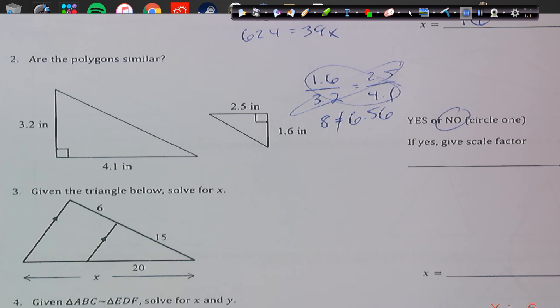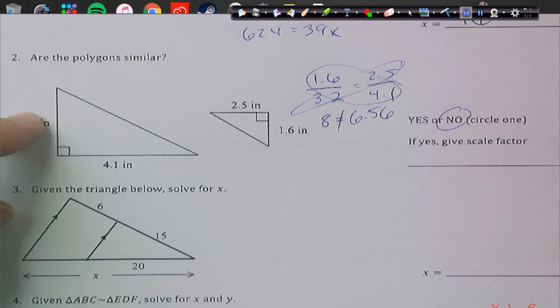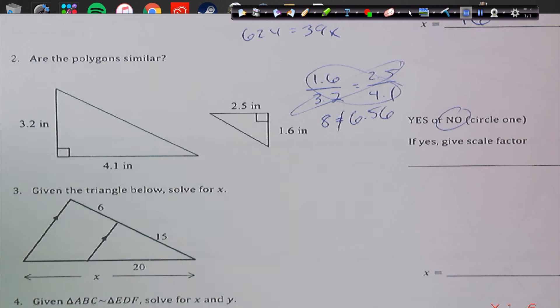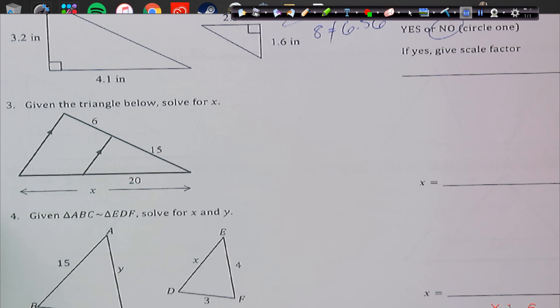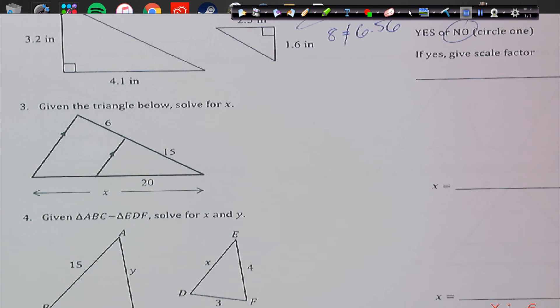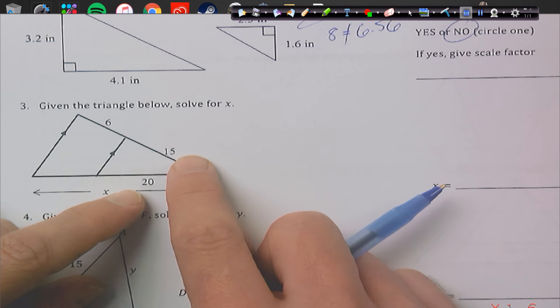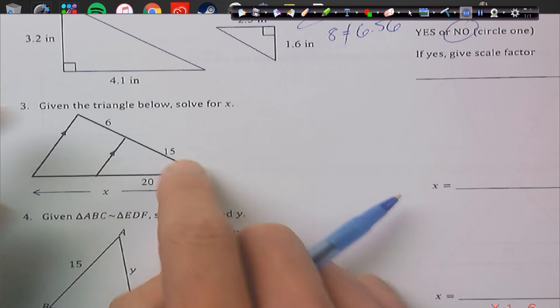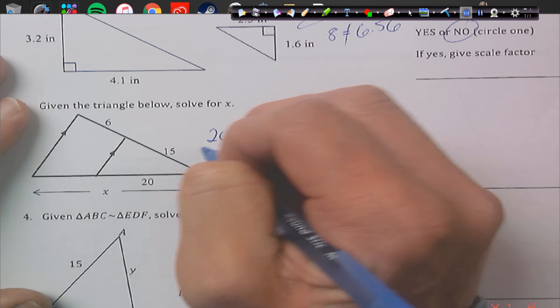We also couldn't say these are similar because I don't have full information. We could use side, angle, side to help us to figure this out, but unfortunately our sides are not proportional. Alright, given this triangle below, solve for x. Again, we're using similar triangles to help us solve.